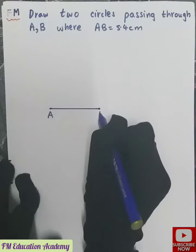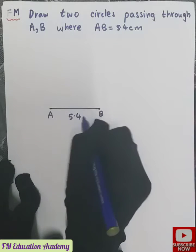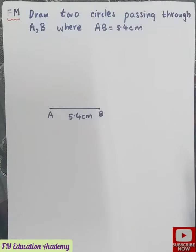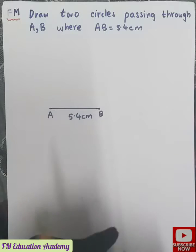AB and it is equal to 5.4 centimeter. Now whenever we want to draw two circles from a line segment, draw the perpendicular bisector.